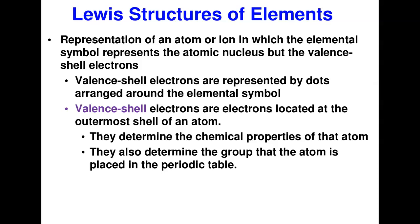The Lewis structure of elements depicts or presents the valence electrons. You represent an element with the elemental symbol, and you use dots to represent the valence electrons. The valence electrons are electrons located at the outermost shell — the highest energy level of the atom.